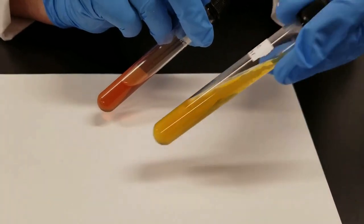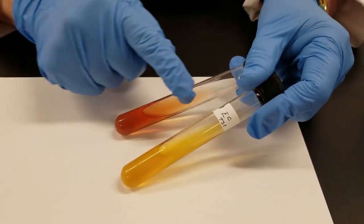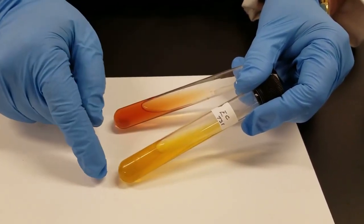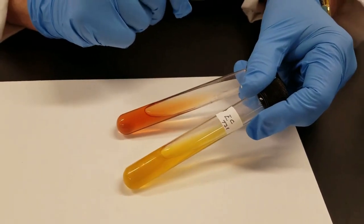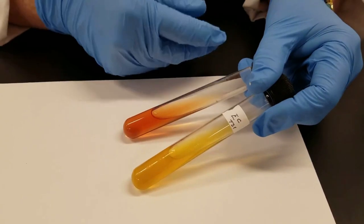Another culture that we inoculated was E. coli. Here we have acid slash acid, meaning that you have acid production on the slant, acid production on the butt. Both of them turned yellow. You do not have hydrogen sulfide production. And it does not appear yet to have any gas production.